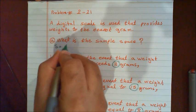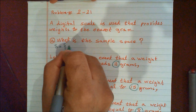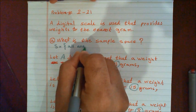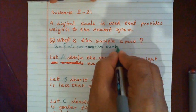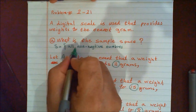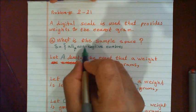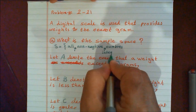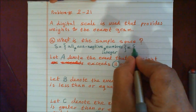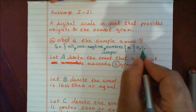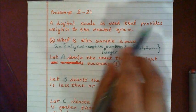The sample space is equal to — you can open parentheses and either put numbers or simply describe it by saying: all non-negative integer numbers. Or equivalently, you can write it as {0, 1, 2, ...} with no upper limit, because the digital scale provides weight to the nearest gram with no maximum specified.